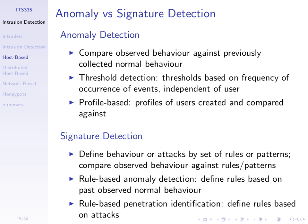The idea is to look at what the normal users do — the normal users of the computer system — understand their behaviour, and then under the assumption that an intruder will do something different, use that information to detect, based on the behaviour, is this an intruder or a normal user? Anomaly detection is to look for strange things, look for anomalies.